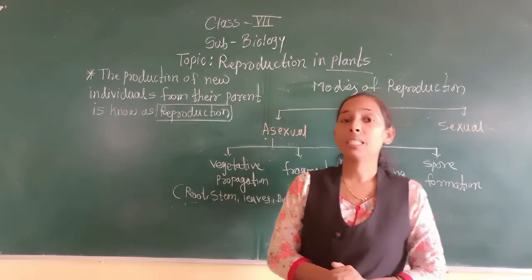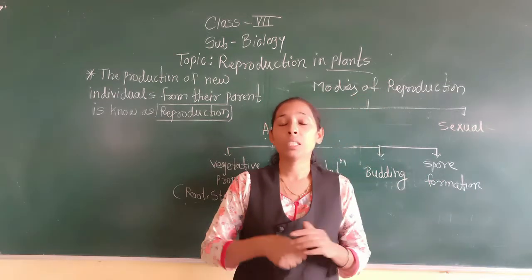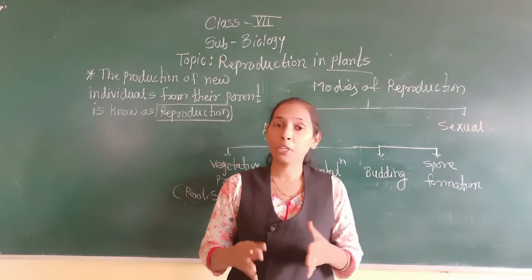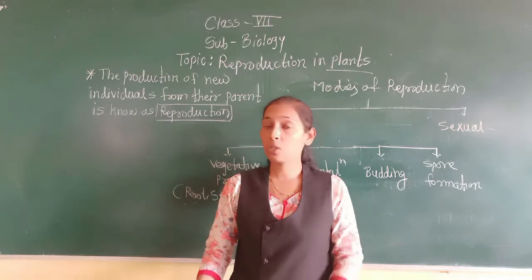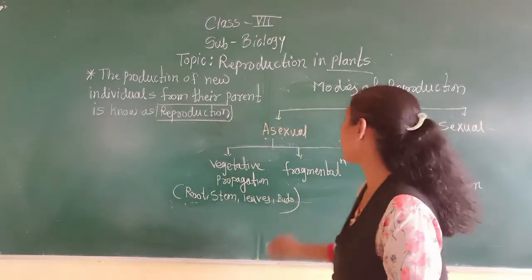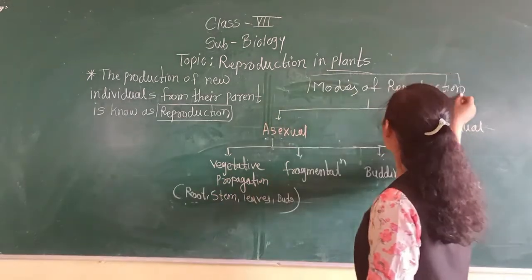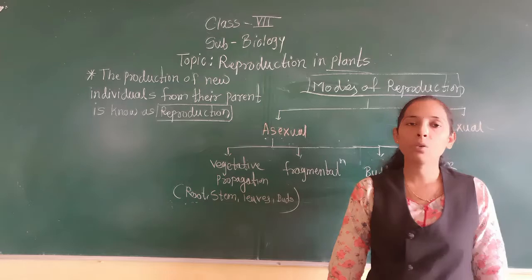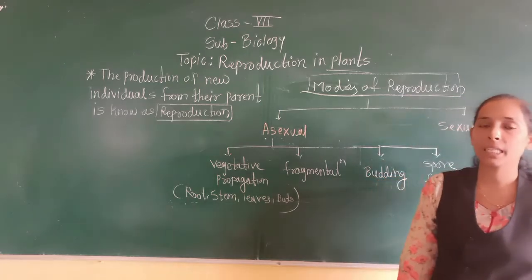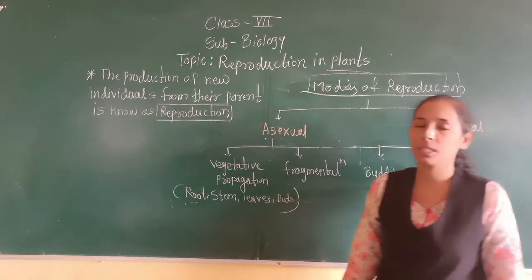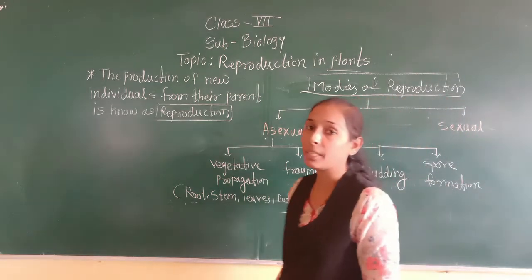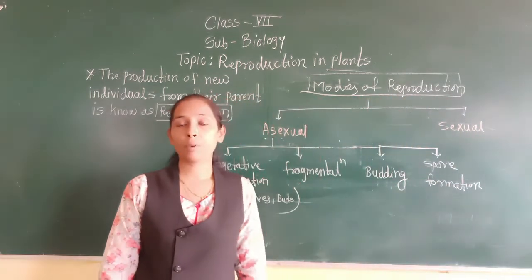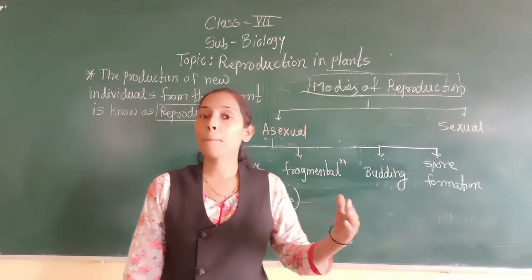Basically the plants are getting reproduced with the help of different types. Let's discuss the first point: the modes of reproduction — how the plants are getting reproduced with the help of different processes or different methods.